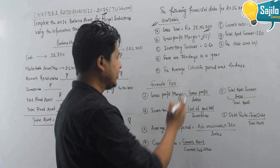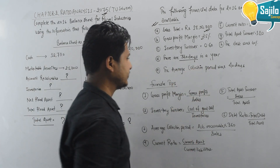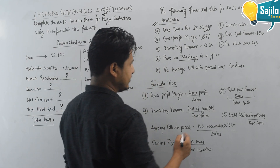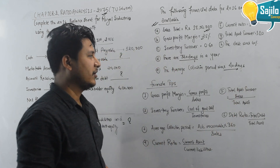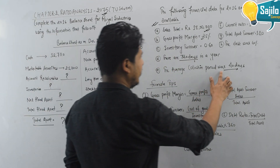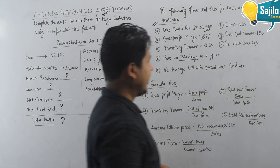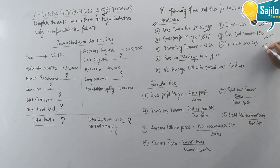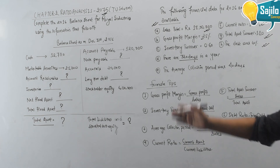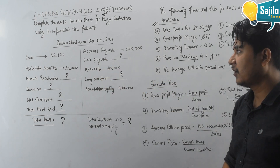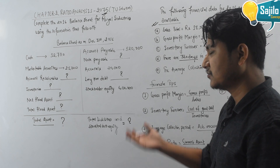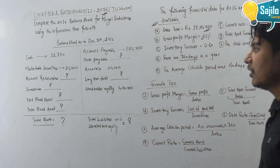The net profit margin is 0.6% of revenue. Working days is 360 days and average collection period is 40 days. Current ratio is 1.6 times. Total asset turnover ratio is 1.20 times. Debt ratio is 60%. The unknown accounts are: account receivable, inventory, fixed assets, total fixed assets, total assets, notes payable, and long-term debt.